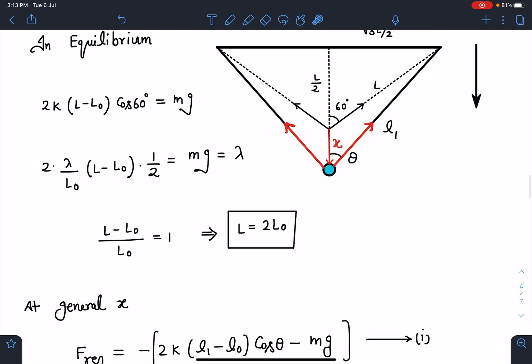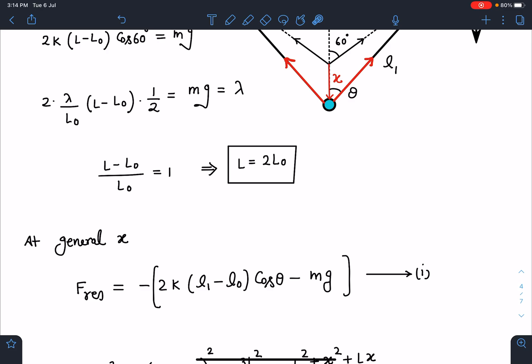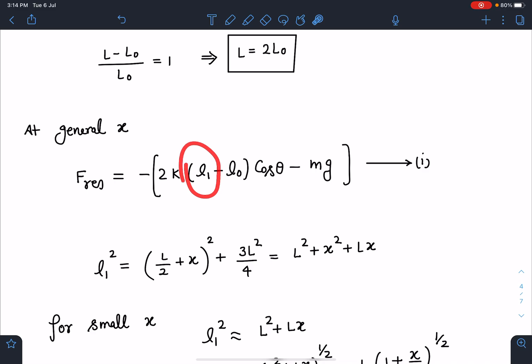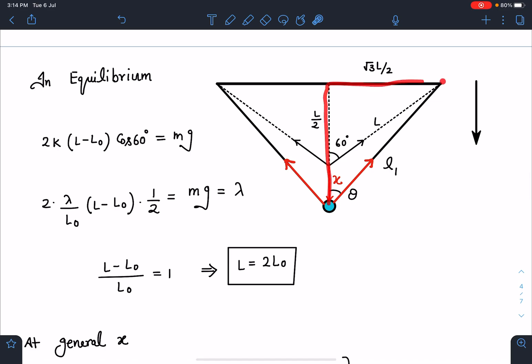At any general x, if I write now the new length I am taking for the string as L₁, and L₁ here is the instantaneous length now at general x, so my restoring force will become -2k(L₁ - L₀)cos θ - mg. This is the equation, let's call this equation number one. So one by one we are going to find this new value of L₁ and θ in terms of x.